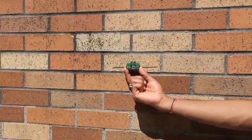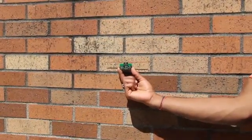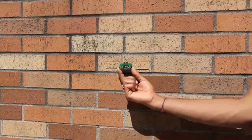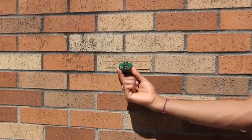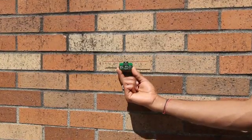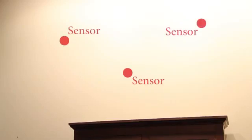Tiny Ambient Backscatter devices can also be embedded deeply into inaccessible sites such as concrete walls, floors, or roofs. Since embedded devices have no battery, they last forever and require zero maintenance. Such tags can leverage ambient signals for sensing and communication and enable long-term home monitoring and industrial applications.